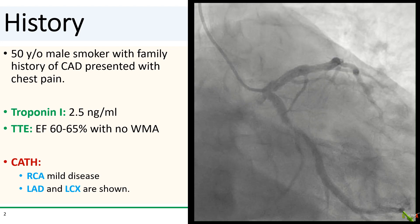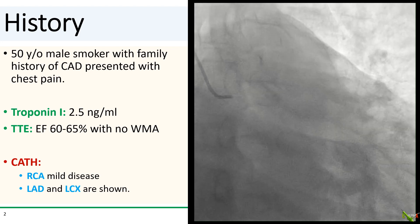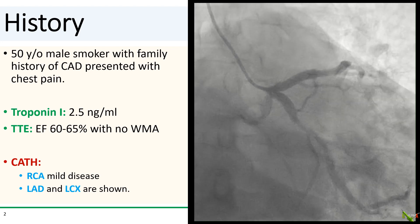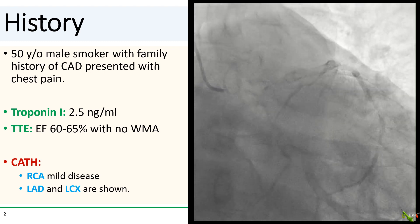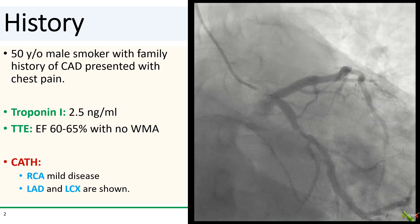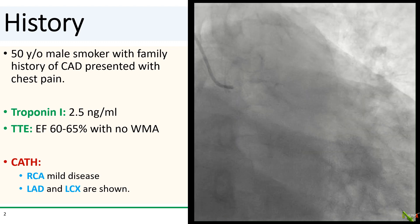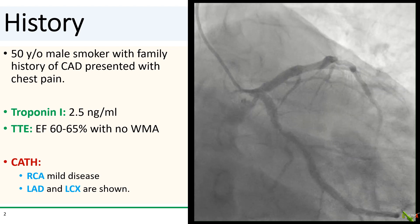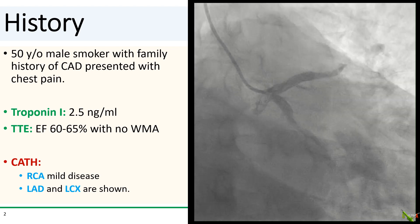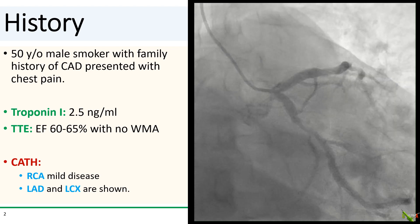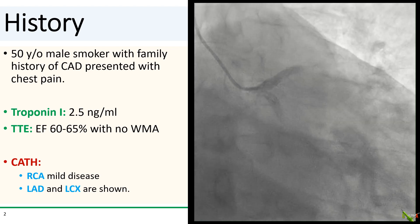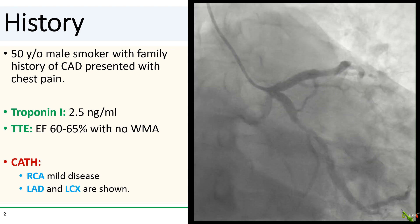The patient is a 50-year-old male smoker with a family history of CAD who presented with chest pain and rolled in for an NSTEMI with a troponin of 2.5 nanograms per mil. His echo was normal. On cath, the RCA has only mild disease. The LAD and circumflex are shown.